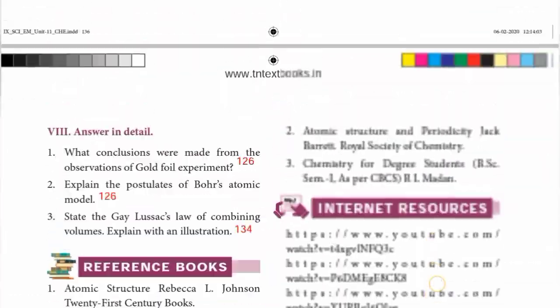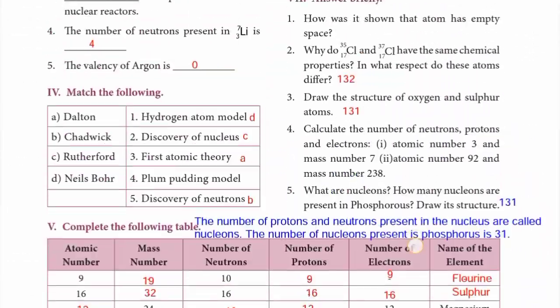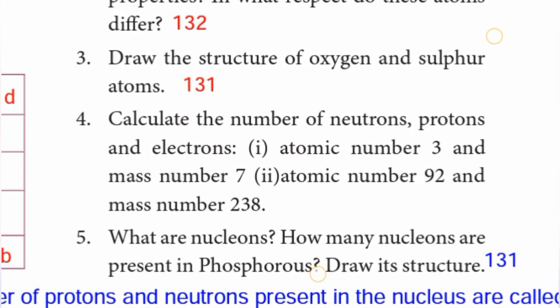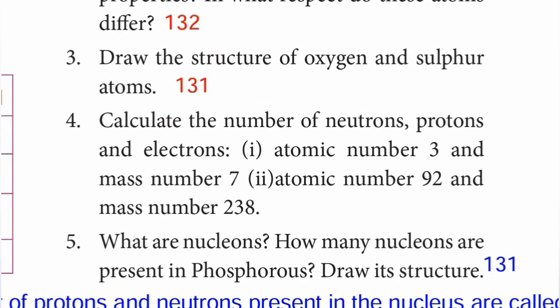Question number 4: calculate the number of neutrons, protons, and electrons. First: atomic number 3 and mass number 7. Second: atomic number 92 and mass number 238. We are given the atomic number and mass number, and we need to find the number of neutrons, protons, and electrons.